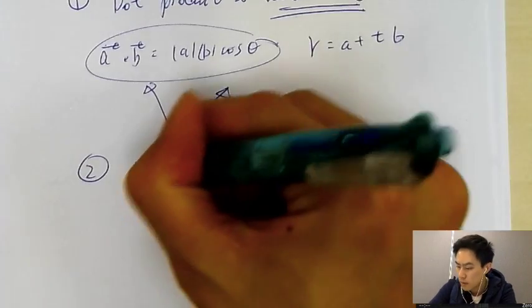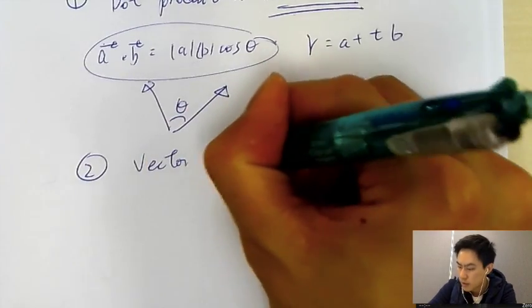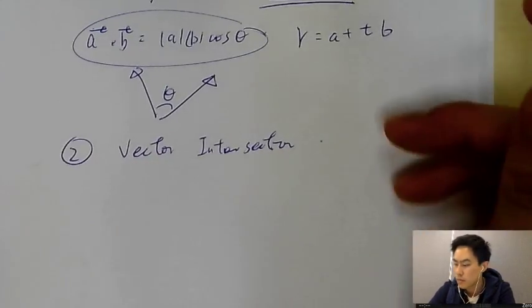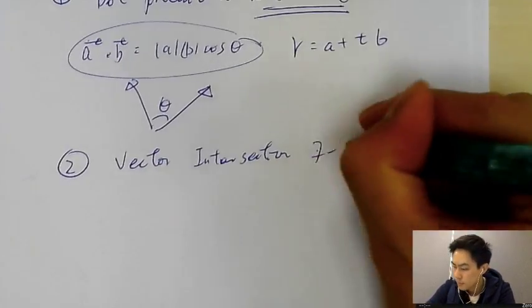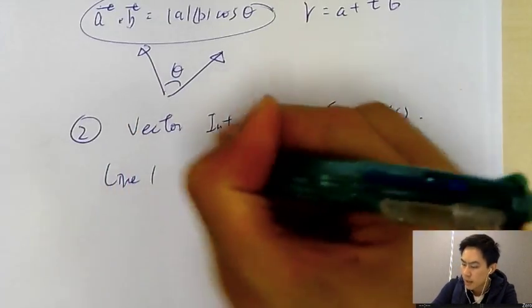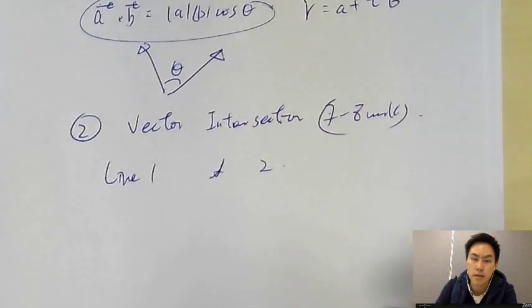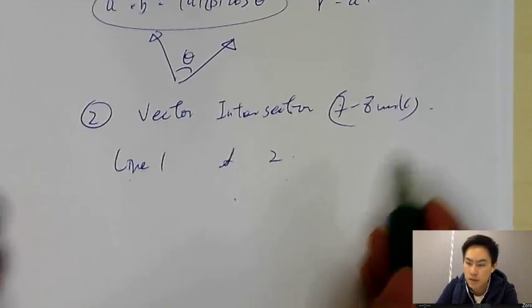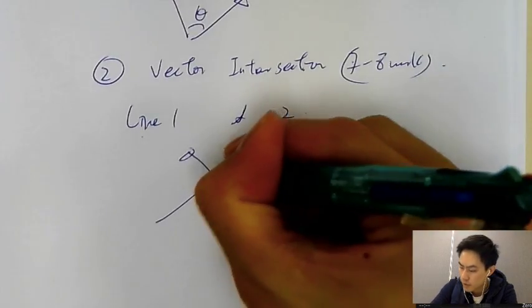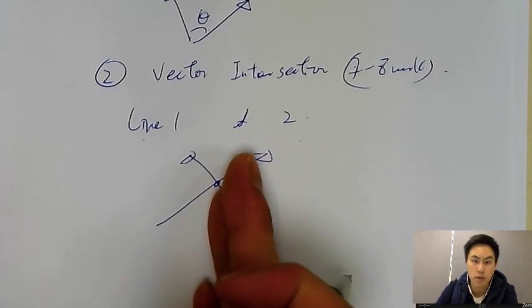The second type of question will be vector intersection. Basically this kind of question will be like 7 to 8 marks. They will give you line 1 and line 2, then you have to make it equal to find the vector intersection—basically pointing different directions and we have the intersection point.